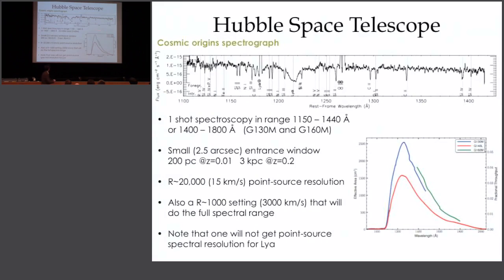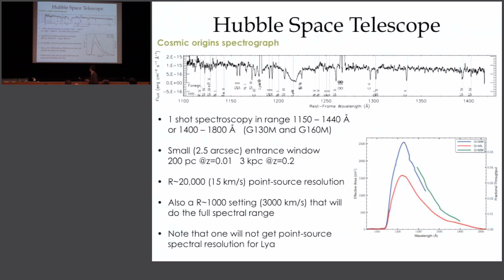With COS, in one shot you get spectroscopy across 300 Ångströms roughly. You see nicely exposed continuum — this is one orbit from HST, not a particularly bright galaxy — and it has a Lyman-Alpha absorption line. It has settings for mid-resolution spectroscopy from about 1,100 to 1,800 Ångströms, and two high-resolution settings. It's very efficient and sensitive, particularly at the blue end. It has a small entrance window of about two and a half arcseconds across. You get high resolution at resolving powers of 20,000, so that's 15 kilometres per second — really, really nice.